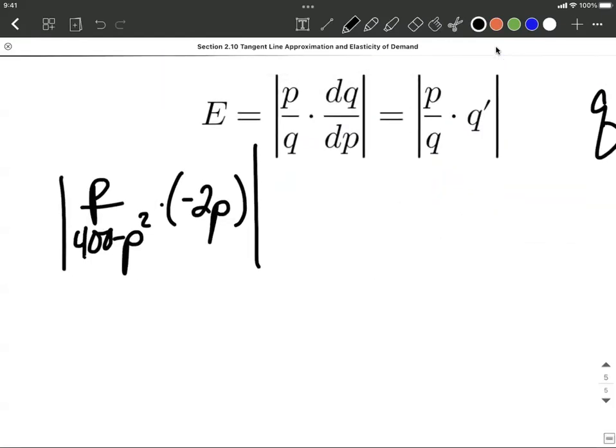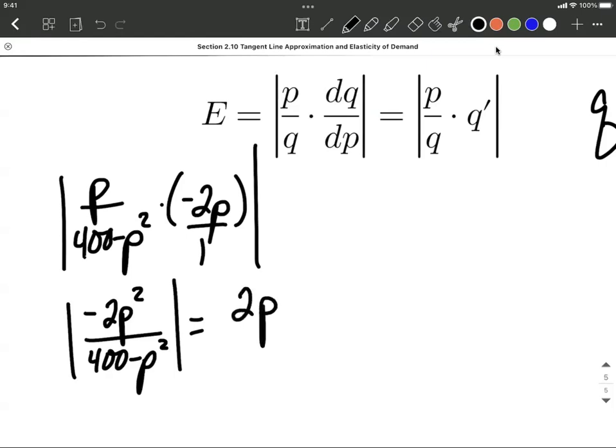This is the absolute value of p over 400 minus p squared multiplied by negative 2p. I'm going to think this is in the numerator, so I can put these together, negative 2p squared over 400 minus p squared. As we get rid of this absolute value sign, we don't have to worry about the denominator, we're just going to make that a positive 2 in the numerator. This is the format that they want on online homework systems.